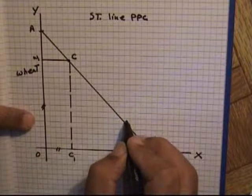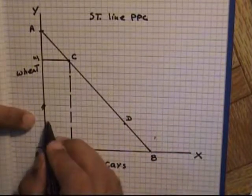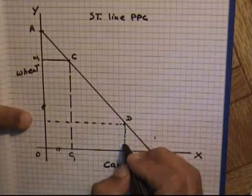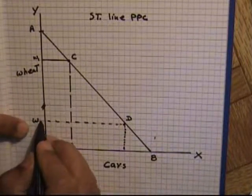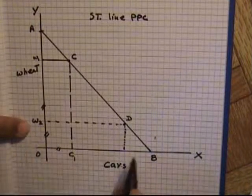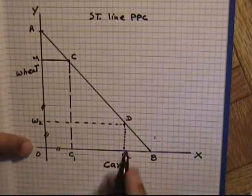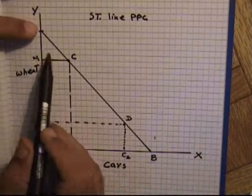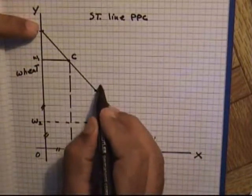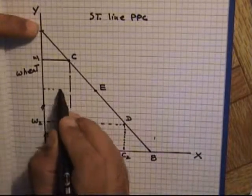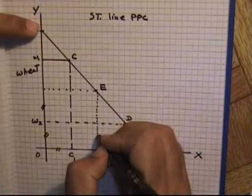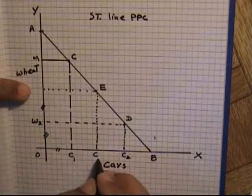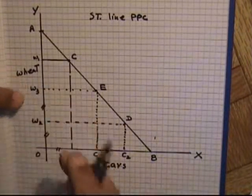Likewise, if the country decides to produce at point D, the production of cars is more than the production of wheat. The production of wheat is OW2, which is less than the production of cars. Similarly, at another point E, the country is allocating almost equal resources to both sectors, so production of cars is OC3 and production of wheat is OW3, which is almost the same.